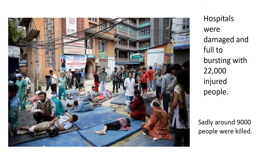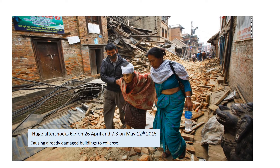Many hospitals were also damaged in the earthquake, meaning there simply weren't enough hospitals running to cope with the 22,000 people who were injured. This is why makeshift hospitals had to be set up on the streets of Kathmandu. Sadly, around 9,000 people were killed. With the aftershocks continuing, lots of people just couldn't get the medical treatment that they needed.